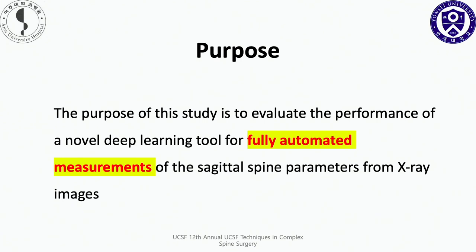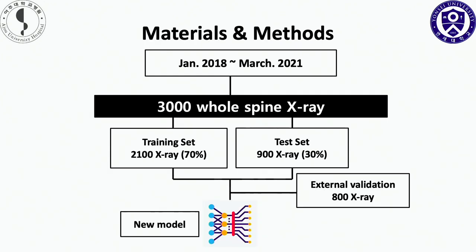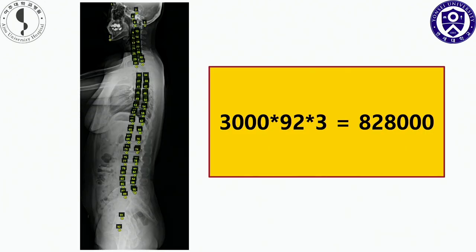In our study, the purpose was to evaluate the performance of a novel deep learning tool for fully automated measurement of spinal alignment parameters from X-rays. We used 3,000 whole spine X-rays: 2,100 for the training set and 900 for the test set, with external validation performed on 800 X-rays. We used the VGG network to detect 92 points on one whole spine X-ray, and three researchers annotated the same X-rays.